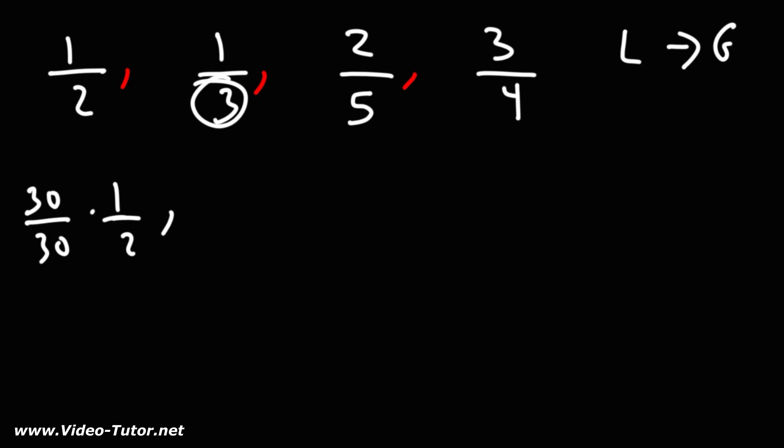60 divided by 3 is 20. So the second fraction I'm going to multiply it by 20 over 20 and that will give me a common denominator of 60.